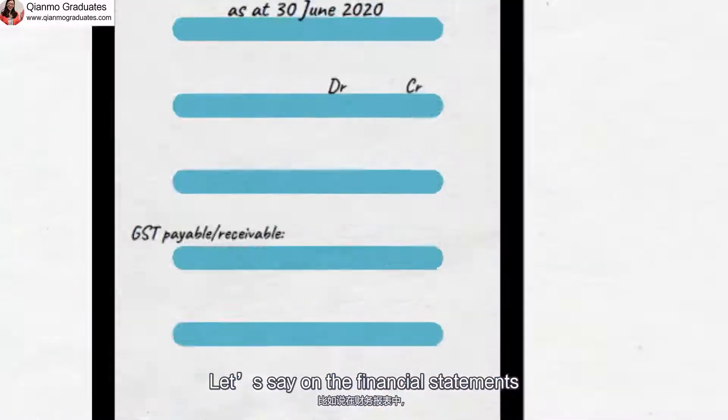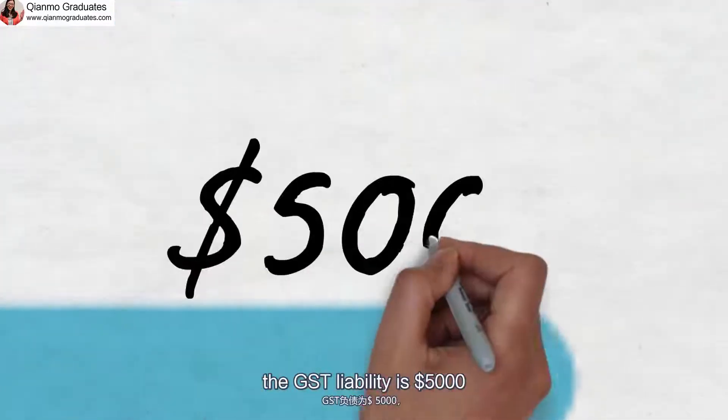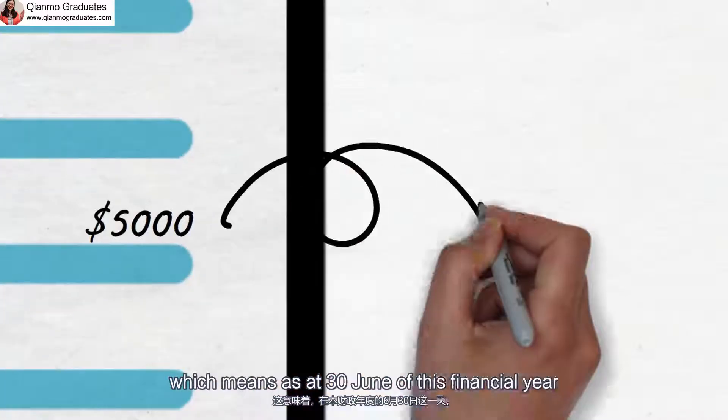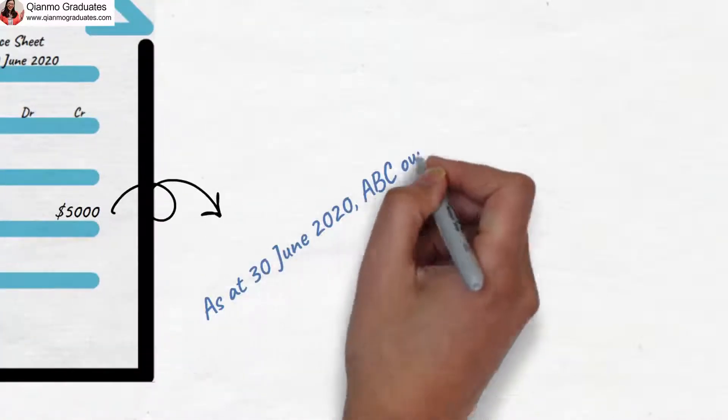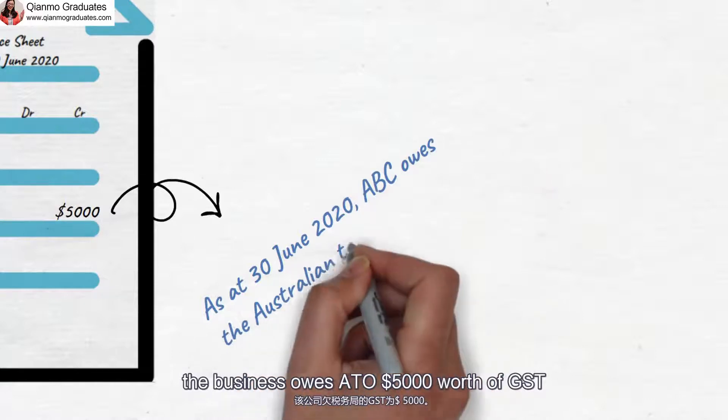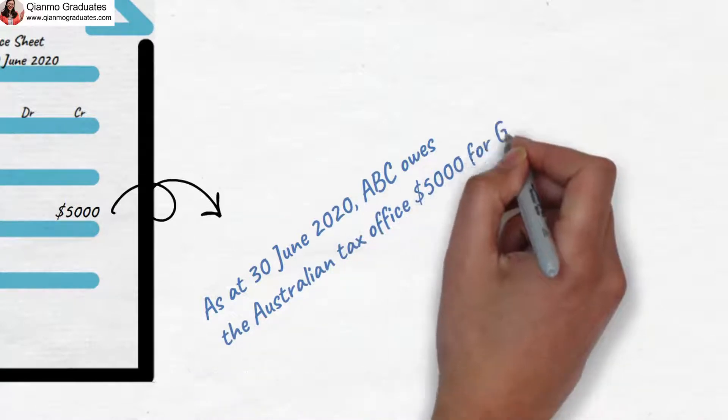Let's say on the financial statements, the GST liability is 5000, which means as at 30th June of this financial year, the business owes ATO 5000 dollars worth of GST.